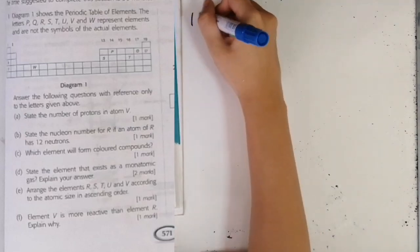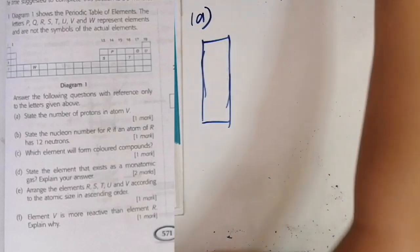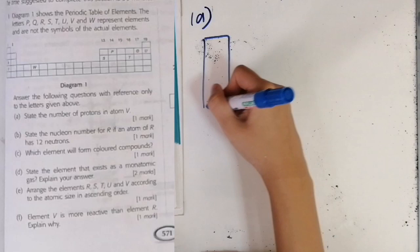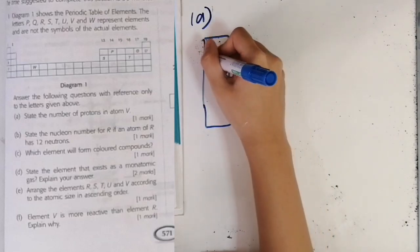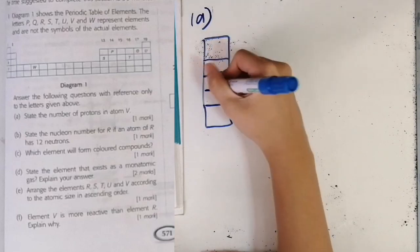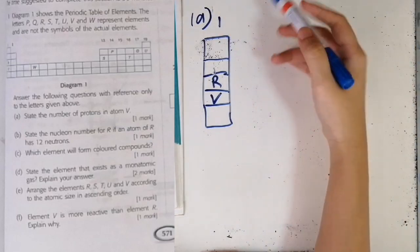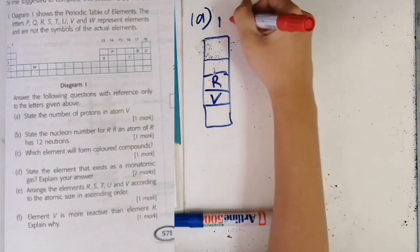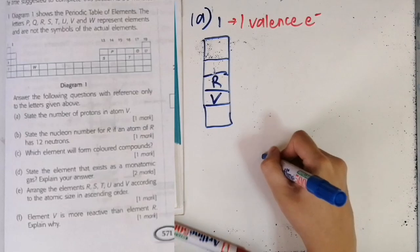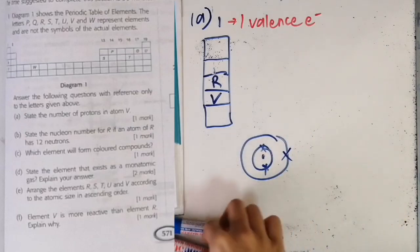The first question: state the number of protons in atom V. Atom V is under group one. We have group one here with five columns, and V is positioned here. As you know, it is situated in group one because it has one valence electron only. Valence electron means the outermost electron — so in an electron configuration, the valence electron is that outermost electron.